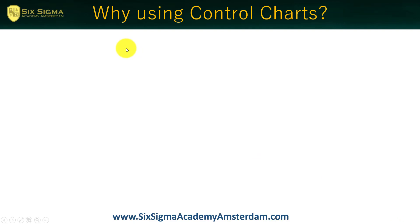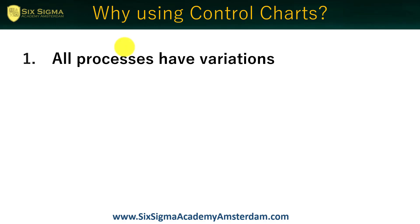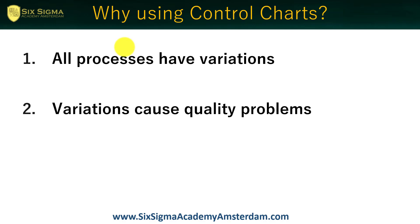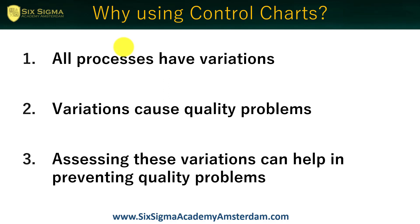So far, that covers the statistics behind the concept of process performance. But the question remains: why use control charts? First, all processes have variations. Variations cause quality problems — they create pain for our customers. Therefore, assessing these variations can help in preventing quality problems. It is very important to understand what kind of variation is present in our process.